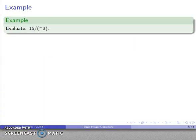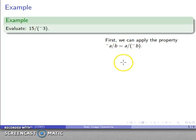15 divided by -3. I have a similar property: -a/b = a/(-b). This negative can attach to either term, so I'll move it to the numerator: -15/3. Another property...